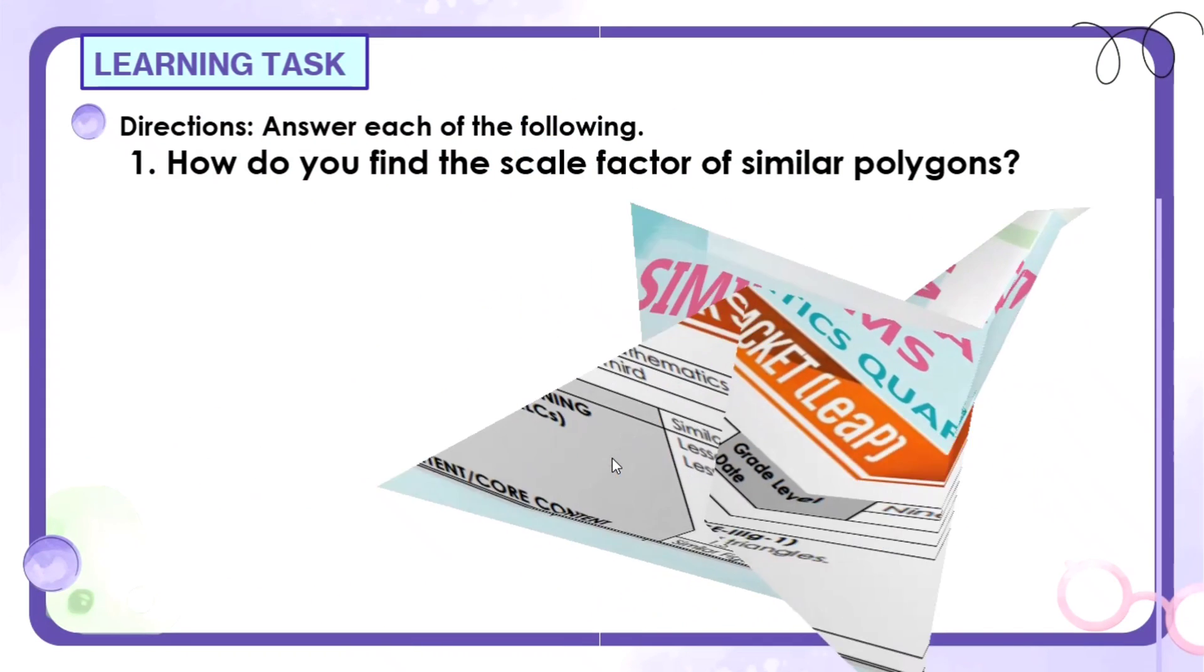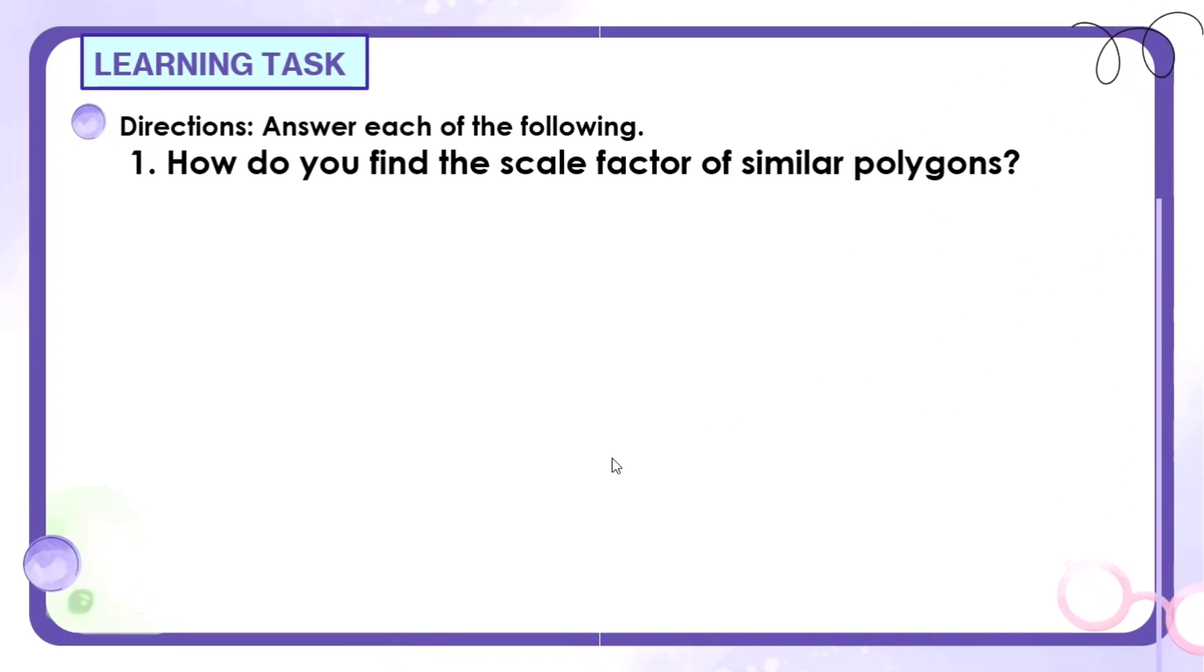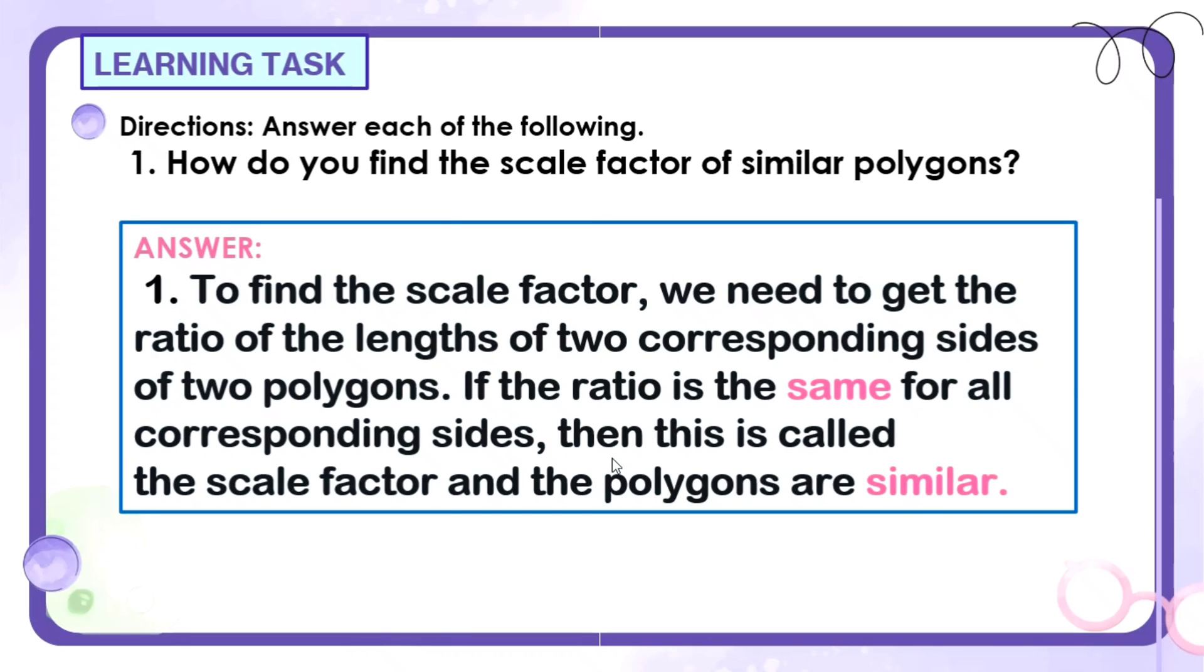Let's answer the learning task. According to the direction, we have to answer the following questions. The first question is: How do you find the scale factor of similar polygons? To find the scale factor, we need to get the ratio of the lengths of two corresponding sides of two polygons. If the ratio is the same for all corresponding sides, then this is called the scale factor and the polygons are similar.